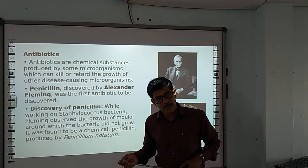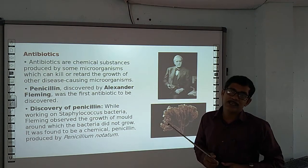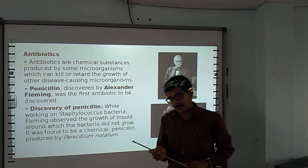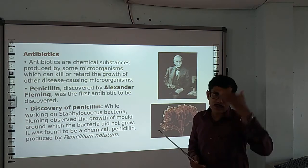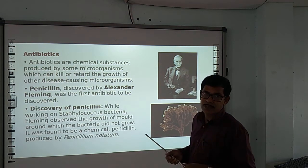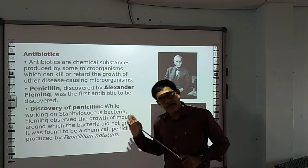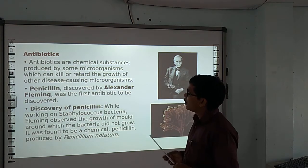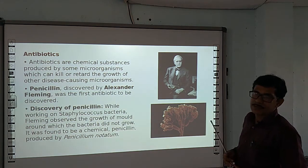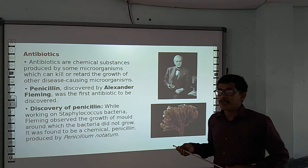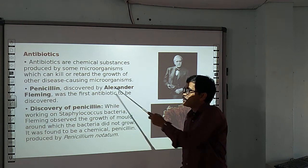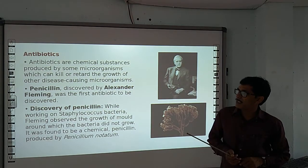When we suffer from any type of disease, we take different types of medicines such as antibiotics and antipyretics. Antibiotics are chemicals that kill germs. Antipyretics lower body temperature. Analgesics reduce pain. Antibiotics are a type of chemical obtained from microorganisms. The first antibiotic discovered was penicillin, discovered by Alexander Fleming. It was produced from Penicillium notatum, which is a type of fungus.